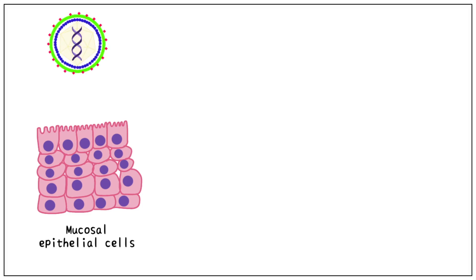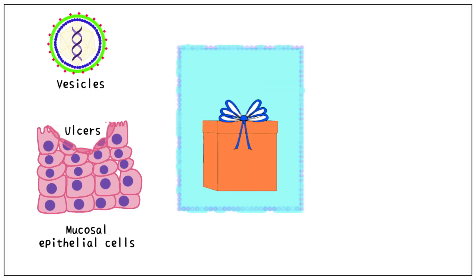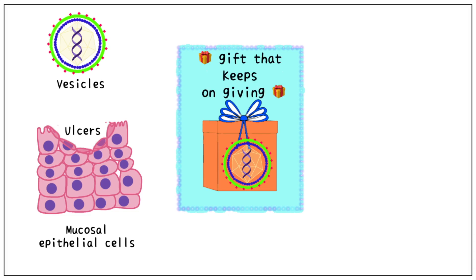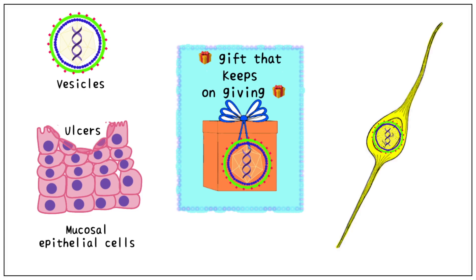After contact with an infectious individual, the virus enters our mucosal epithelial cells, where it causes the formation of fluid-filled vesicles which eventually burst to form ulcers. Herpes has been described as a gift that keeps on giving, meaning the infection is extremely hard to get rid of. Even after the ulcers heal, the virus is still very much present in our bodies. It sneakily travels to the nearest ganglia, where it remains in hiding until it gets a chance to cause another bout of infection.